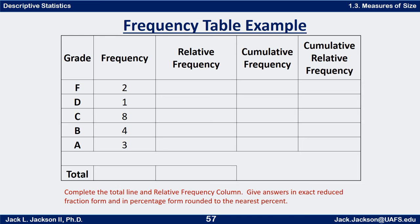Notice that the data is ordinal because there is an order to it: F is the lowest, then D is next, C is higher, B is higher than that, and A is the highest. So here we have the frequencies. See if you can fill out the chart — compute the total for this line, and then use the total and these numbers to compute the relative frequency, both as an exact reduced fraction and as a percentage rounded to a whole number percent, and then do the total.